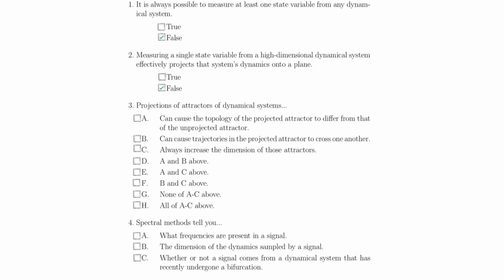Part C states that projections of attractors of dynamical systems always increase the dimension of the attractors, and this is false. Projections always decrease the dimensions of attractors. So Part D must be true, A and B above.